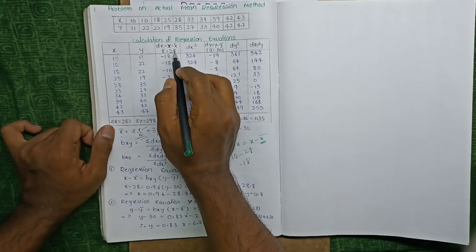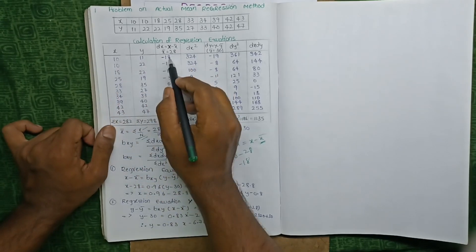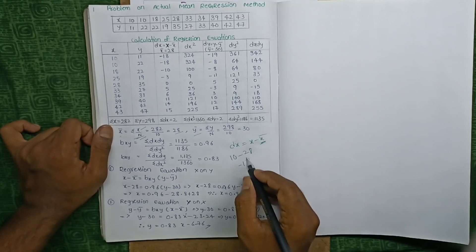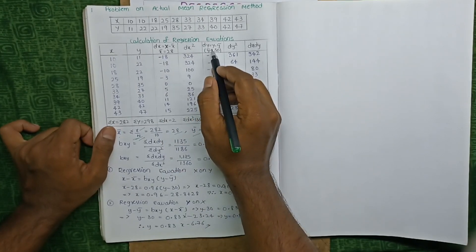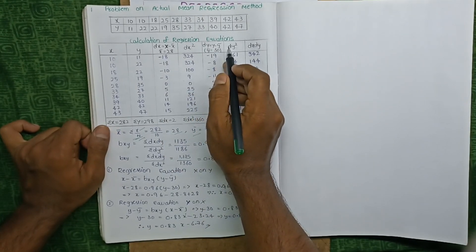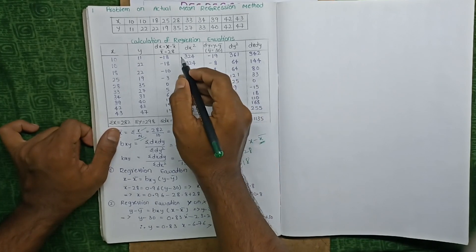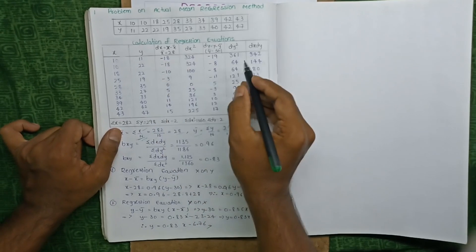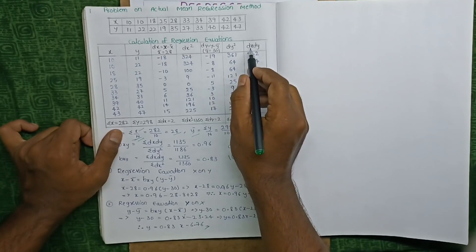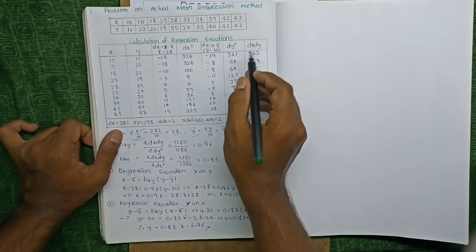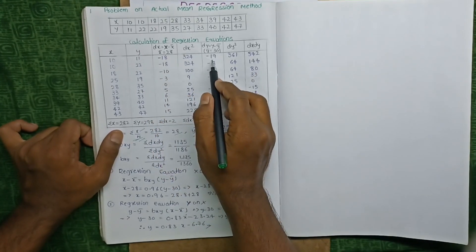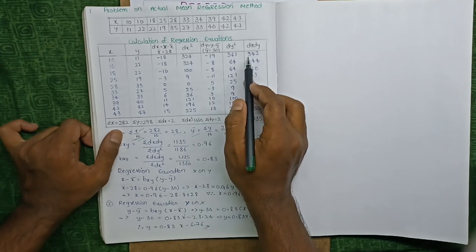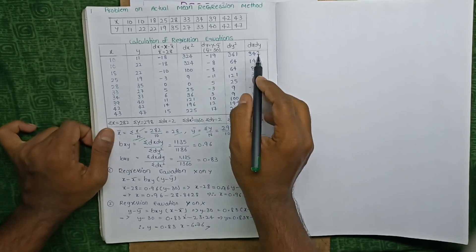dx equals x minus x̄. For example, 10 minus 28.2 gives minus 18. Similarly, dy equals y minus ȳ. For dx², just square the dx value, and same for dy². After that, multiply dx into dy — for example, dx of minus 18 into dy of minus 19 gives plus 342. Then sum all the values.